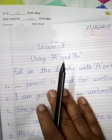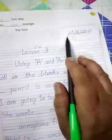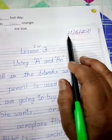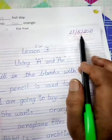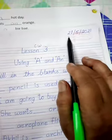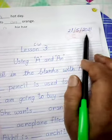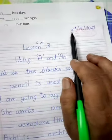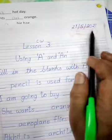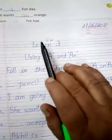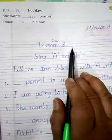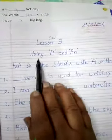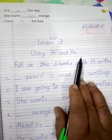So children, we are doing some work in our notebook. First, you put the date: 21-5-2021. Classwork, Lesson 3: Using A and AN. Fill in the blanks with A or AN.